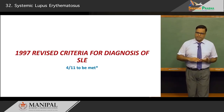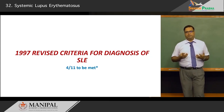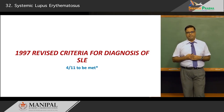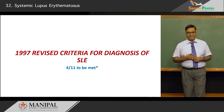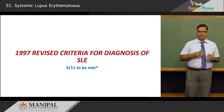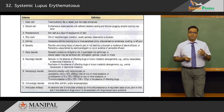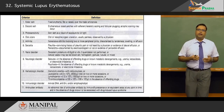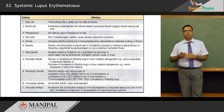Having understood what SLE is and its etiopathogenesis, we now look at diagnostic criteria. The 1997 revised criteria still stand even after 21 years. There are 11 criteria, of which four must be met to successfully diagnose a patient with SLE.